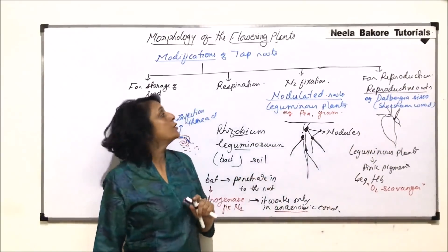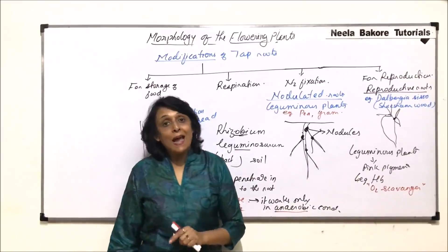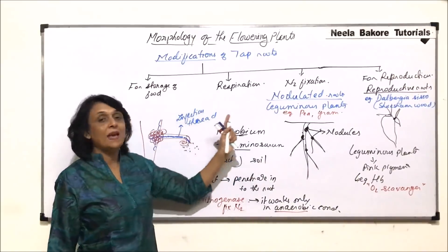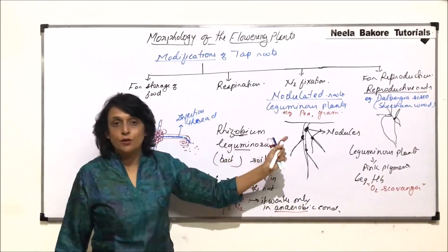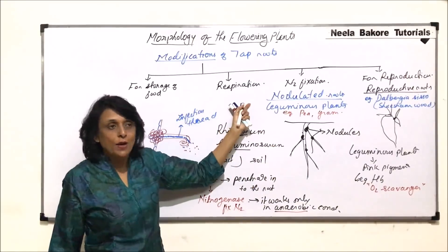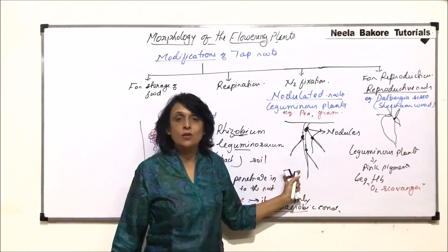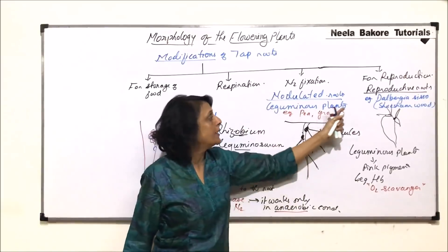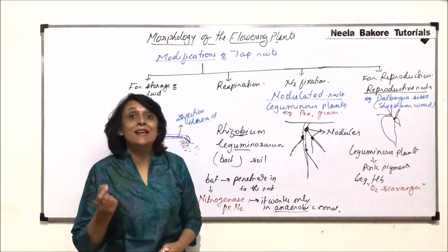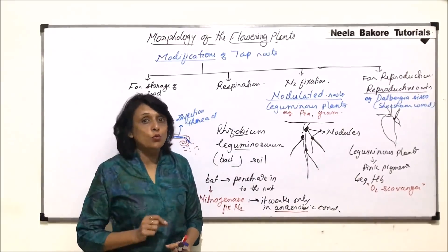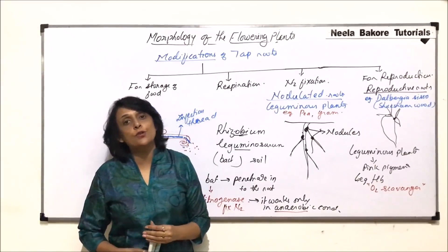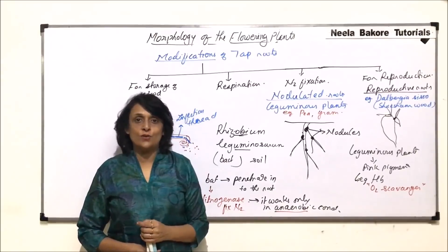So in all these four categories, tap roots have been modified for performing additional functions. It could be for storage of food, for respiration, nitrogen fixation as nodulated roots, and for reproduction. So these are modified tap roots. Now in the next part, we'll take up modifications of adventitious roots.